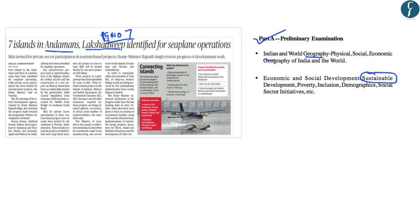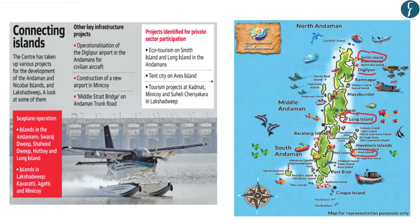In this article, we will try to understand the key decisions taken at the Island Development Agency meeting, the role and composition of the agency, and the holistic development of islands program by NITI Aayog. A key decision was to operationalize sea planes from seven islands in Andaman & Nicobar and Lakshadweep. The Andaman islands include Swaraj Dweep, Shaheed Dweep, Hut Bay, and Long Island. From Lakshadweep, Karavatti, Agatti, and Minikoy islands are included. The names and locations of these islands are important for the preliminary examination.